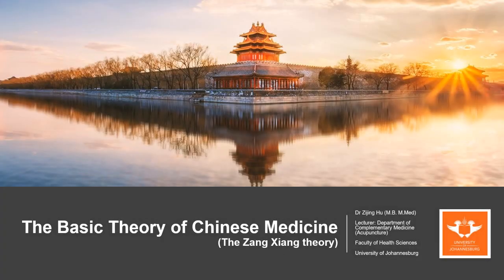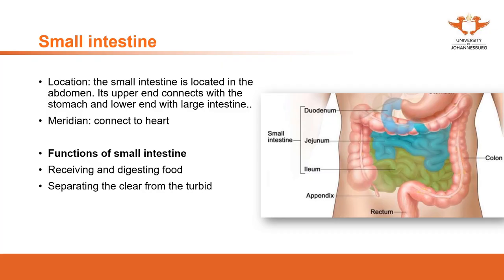In this video we are going to study the small intestine, continuing from the stomach. The food and water from the mouth and the entrance received from the stomach keep going down to the intestine. The small intestine is located in the abdomen - the upper end connects with the stomach and the lower end connects with the large intestine, shown as the blue and green area.